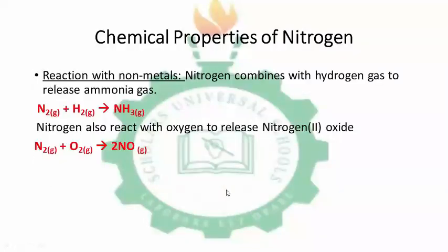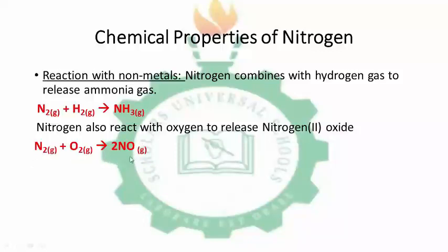Now, reaction with non-metals. Nitrogen combines with hydrogen to form ammonia gas — nitrogen gas combining with hydrogen gas forms ammonia gas. Note that this equation is not balanced. Nitrogen also reacts with oxygen to form nitrogen dioxide, with nitrogen gas reacting with oxygen to form nitrogen dioxide.